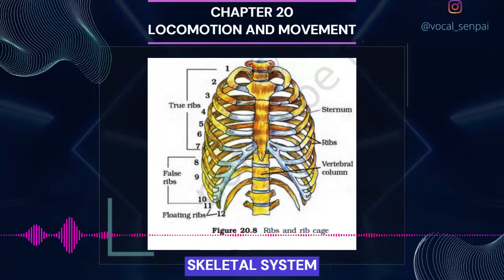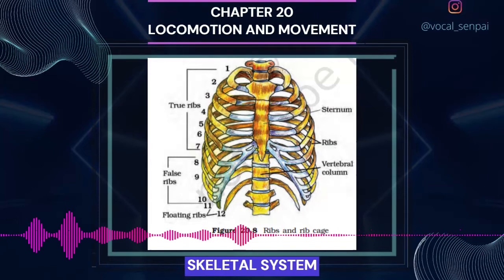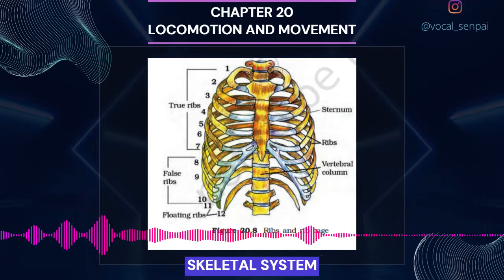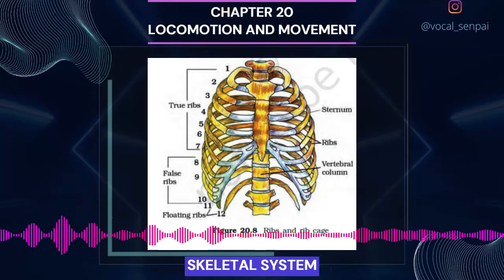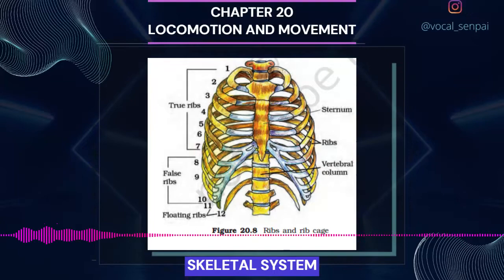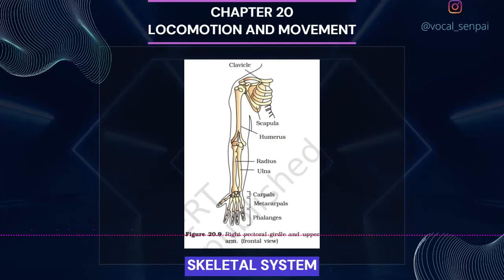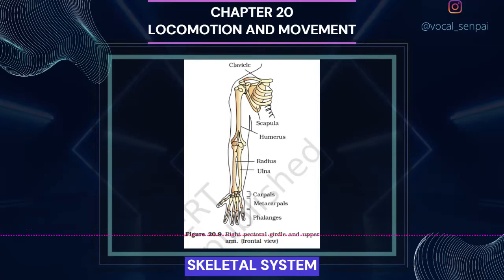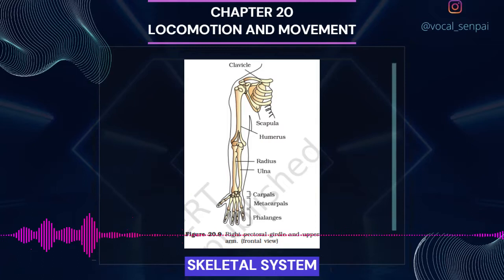There are 12 pairs of ribs. Each rib is a thin flat bone connected dorsally to the vertebral column and ventrally to the sternum. It has two articulation surfaces on its dorsal end and is hence called bicephalic. The first 7 pairs of ribs are called true ribs — they are attached to the thoracic vertebrae dorsally and connected to the sternum ventrally with the help of hyaline cartilage. The 8th, 9th and 10th pairs of ribs do not articulate directly with the sternum but join the 7th rib with the help of hyaline cartilage; these are called vertebrochondral (false) ribs. The last 2 pairs — the 11th and 12th — are not connected ventrally and are called floating ribs. Thoracic vertebrae, ribs and sternum together form the rib cage.